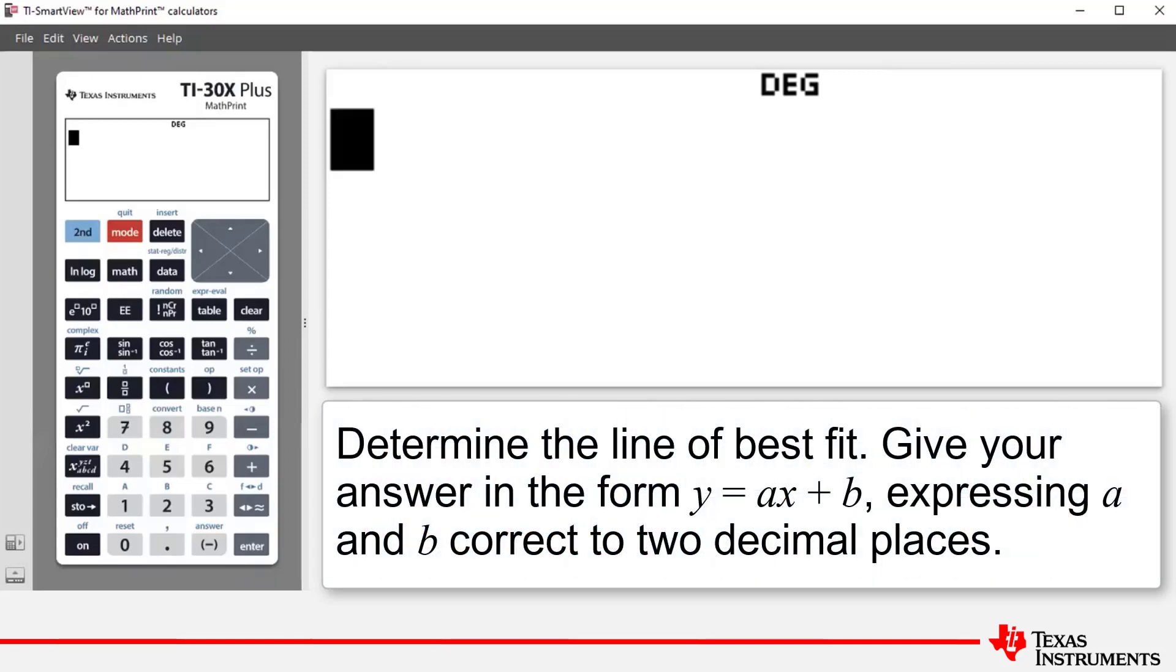Part A asks us to determine the line of best fit, giving our answer in the form Y equals AX plus B, expressing A and B correct to two decimal places.